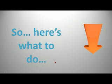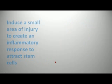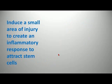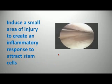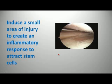So here's what to do: induce a small area of injury to create an inflammatory response to attract stem cells. You make a very tiny hole in the areas where osteoarthritis is present, particularly in the areas of bare bone.